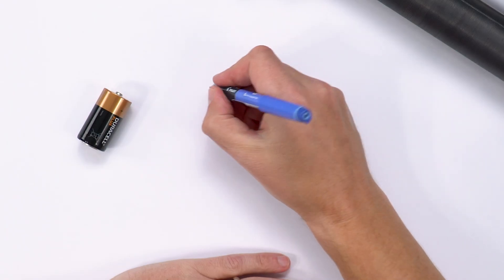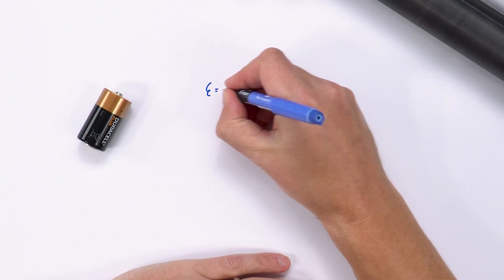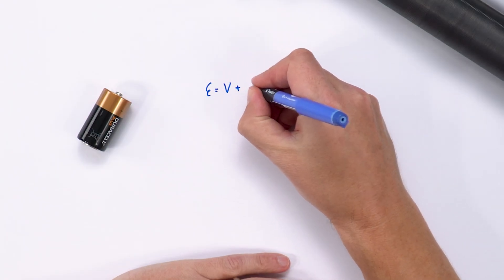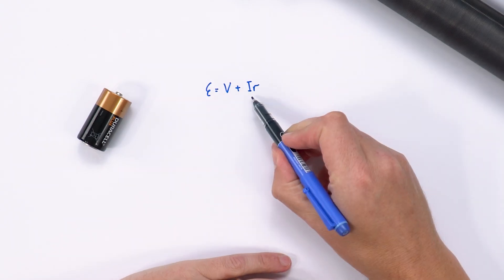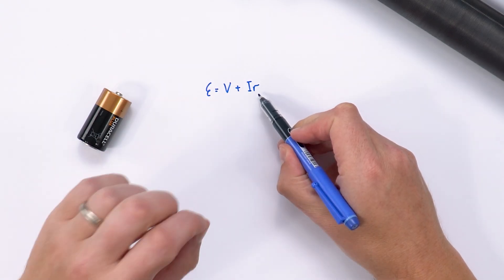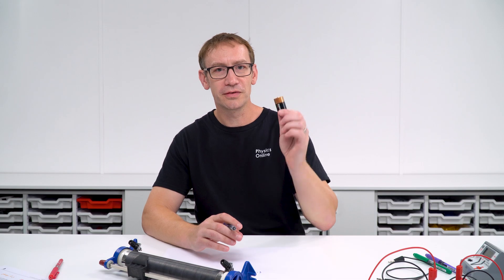So an equation concerning internal resistance is that the EMF is equal to the terminal PD plus I times R, where that's the current going around the circuit and little r represents the internal resistance of that cell.